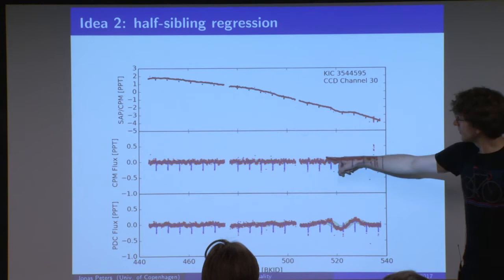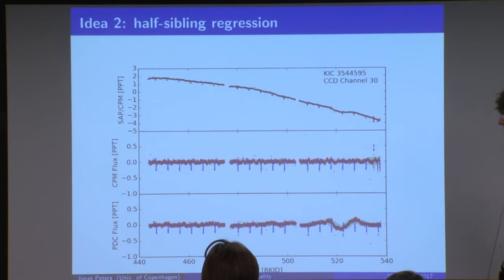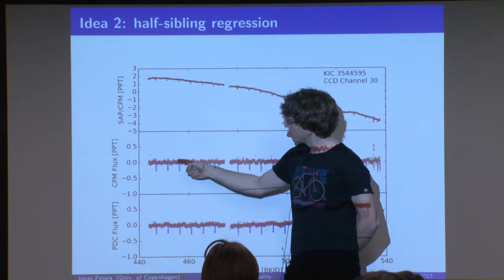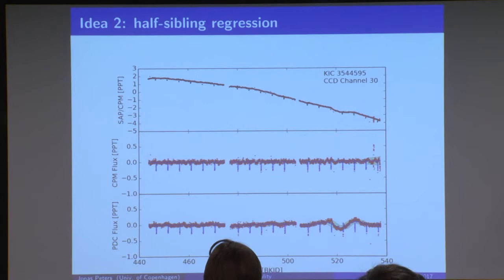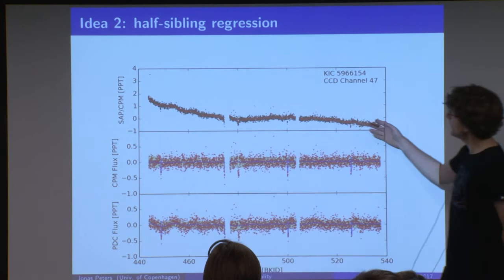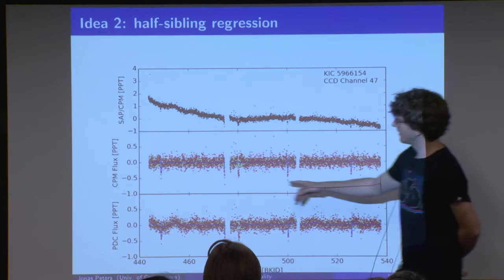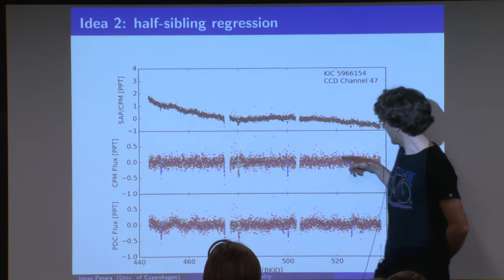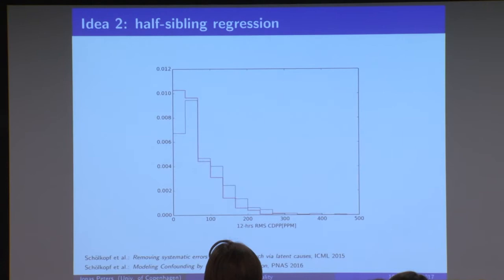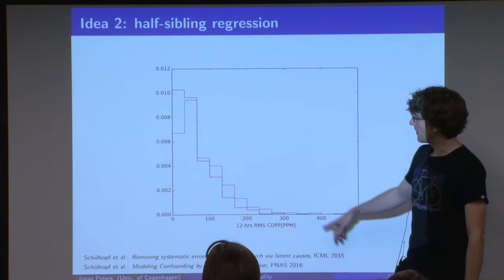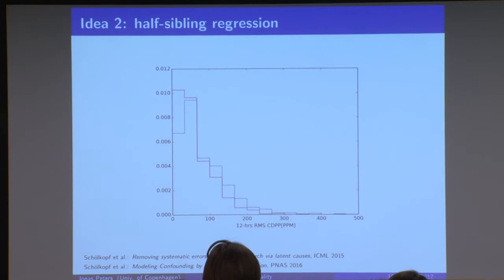Also the smaller dips can be removed very nicely with half-sibling regression. This is state of the art — here you see the dips of the exoplanet very nicely and regularly. In a more noisy case, the original data makes it unclear whether there's a planet, but after systematic noise removal the regular dips become clearer. This was done with astronomers in New York and apparently some of the exoplanets found with this method have been confirmed. The method found a couple of new ones.